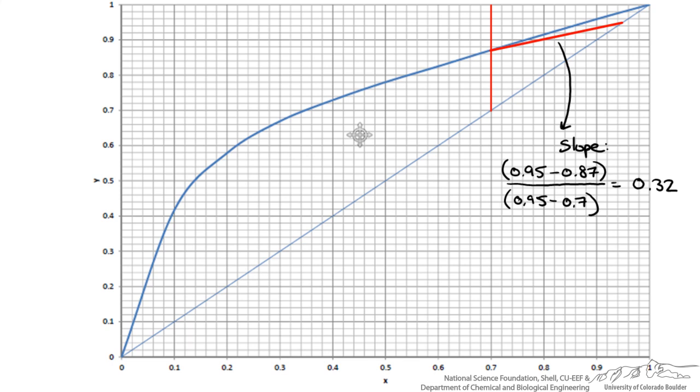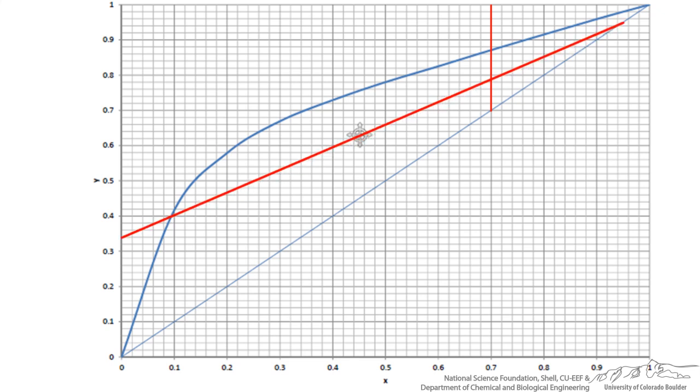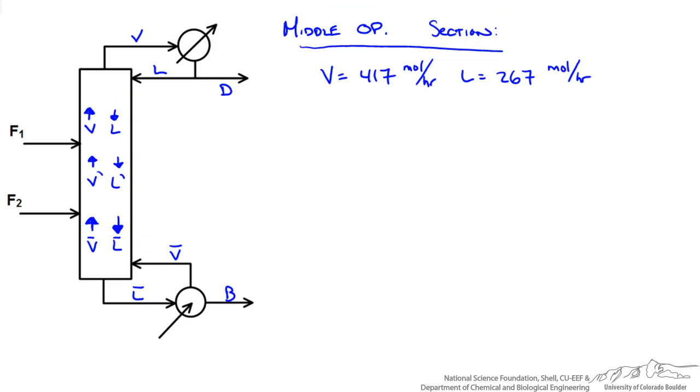We can go back to our chart and now erase this line since that is not what we are operating at and plug in our line for our actual operating conditions which should have a slope of 0.64. Using the intercept, calculate it to be 0.34. If we pick two points on that line the slope should be 0.64 and you can do that just as a validation.